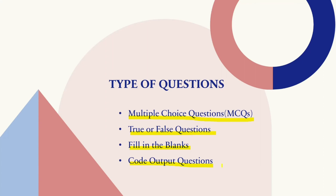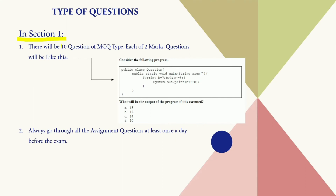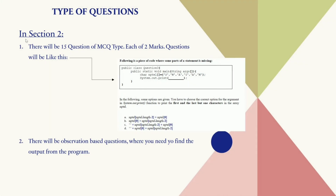By understanding the different types of questions, you can prepare yourself to tackle each type effectively and maximize your chances of success. Section 1 covers Programming Fundamentals, consisting of 10 questions each carrying two marks. The questions test your understanding of data types, control structures, loops, and functions, and may involve coding in Java to solve simple problems. Make sure to practice coding exercises and revise the theory thoroughly to perform well in this section.